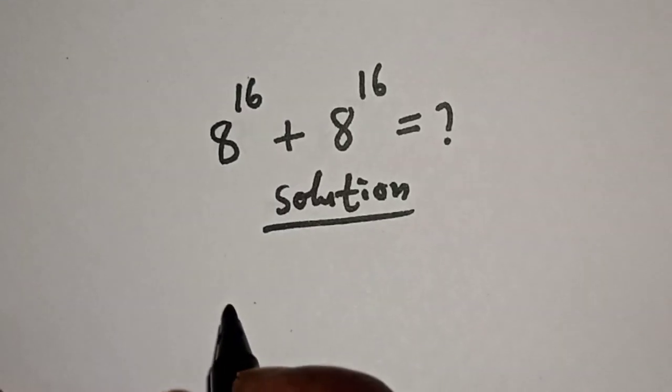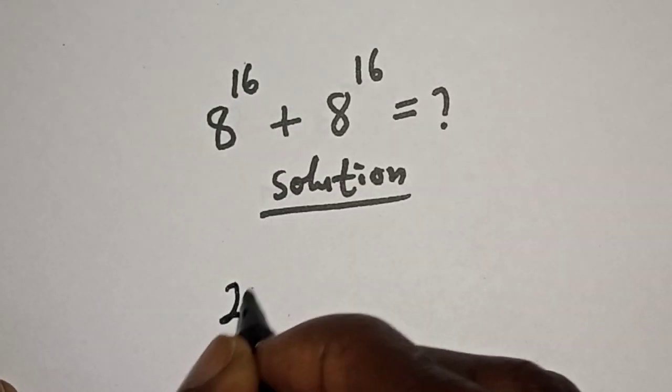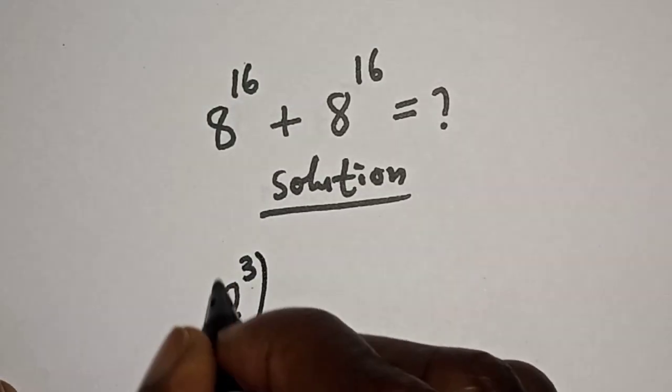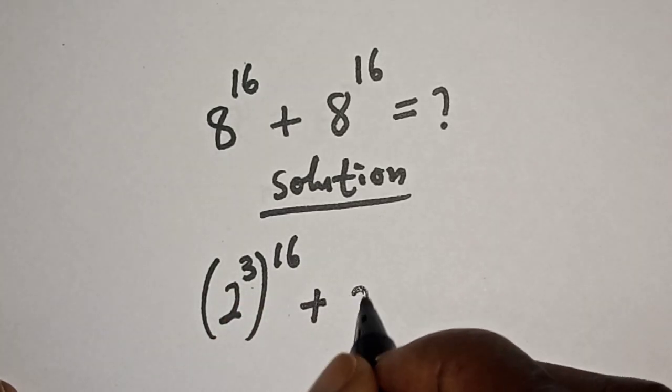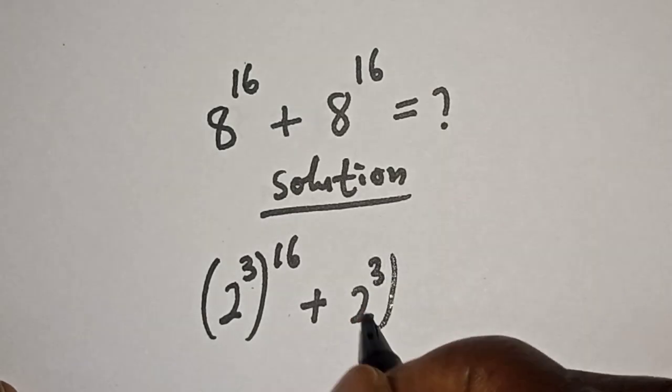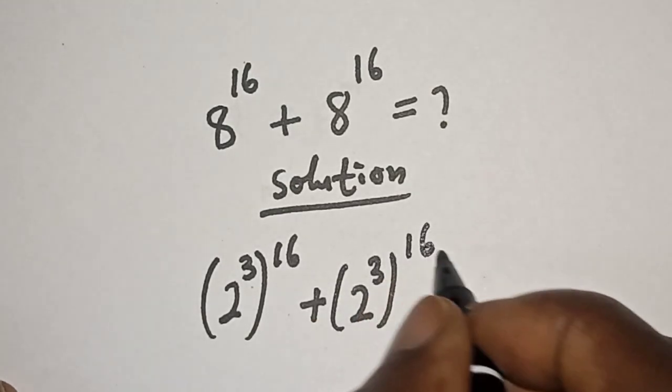Then 8 raised to power 16 can be rewritten as 2 raised to power 3 to the power of 16, plus same thing, 2 raised to power 3 to the power of 16.